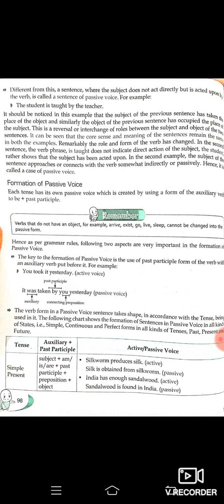This is a reversal or interchange of roles between the subject and object of the two sentences. The core sense and meaning of the sentence remain the same. The verb phrase 'is taught' does not indicate direct action of the subject 'the student' — rather it shows that the subject has been acted upon. Hence it is called a case of passive voice.